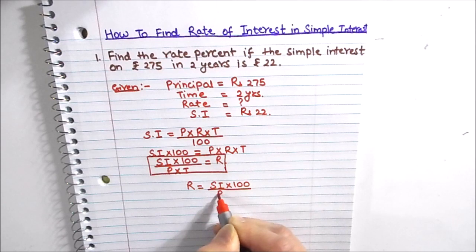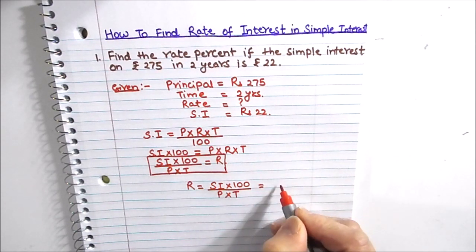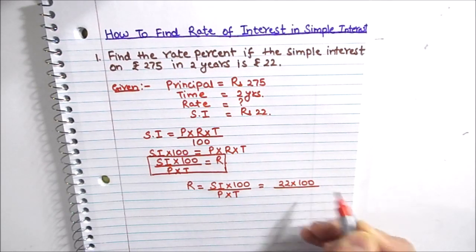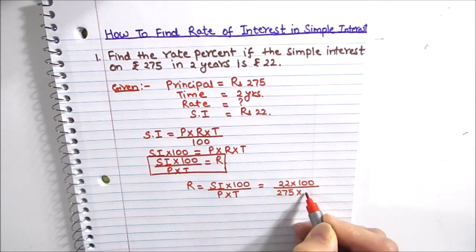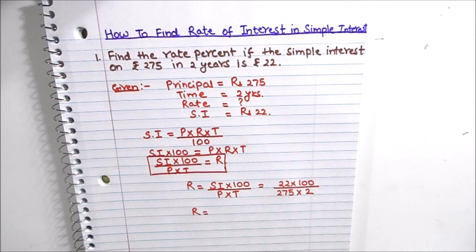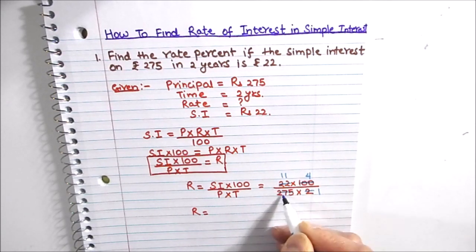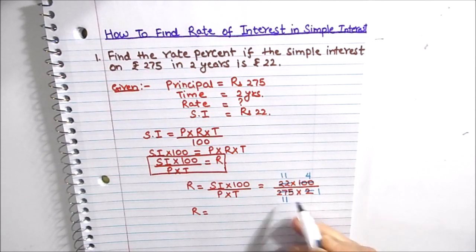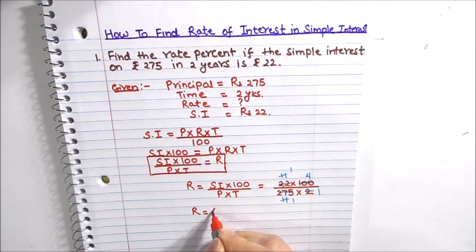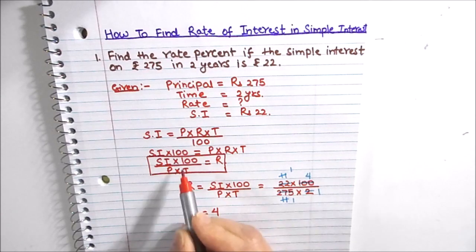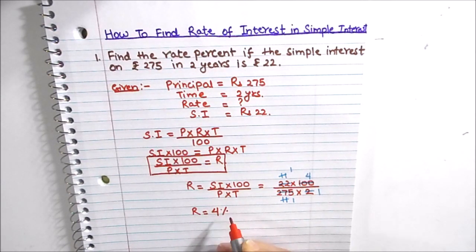So R = SI × 100 ÷ (P × T). Substituting the values: R = 22 × 100 ÷ (275 × 2). Simplifying: 2 cancels with 22 to give 11, and 100 and 275 share a common factor of 25, giving 4 and 11 respectively. The 11s then cancel, leaving R = 4. Since rate of interest is in percentage, the answer is 4%.